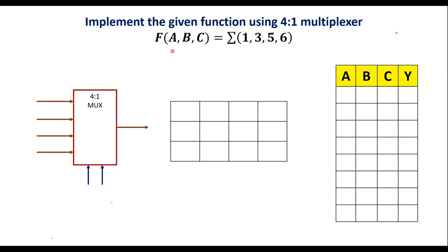The given function is f(a, b, c) = Σ(1, 3, 5, 6), where 1, 3, 5, 6 are the minterms and a, b, c are the variables. These variables should be used as select lines. However, this function has 3 variables, meaning 3 select lines, and since 2³ = 8, to implement this directly we would need an 8-to-1 mux.